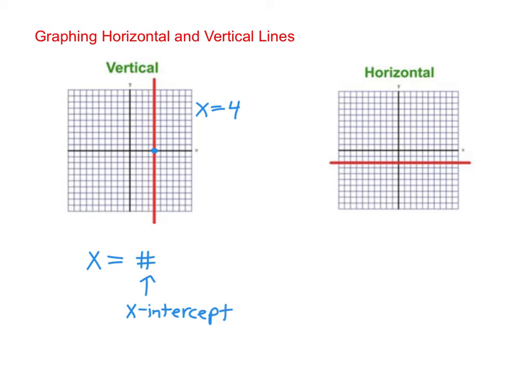Now a horizontal line is a line that goes straight across from left to right and the general form for horizontal line is y equals a number where that number is the y-intercept. That's where the graph crosses the y-axis.